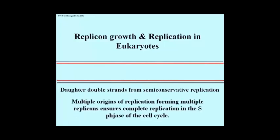Since single eukaryotic chromosomes can have 25 to 50 or more times the amount of DNA of a bacterial cell, it's clear that multiple origins of replication ensure that all the DNA in a chromosome is replicated on time — that is, during the 8 hours or less, or 10 hours or less, of the S phase of a eukaryotic cell cycle.